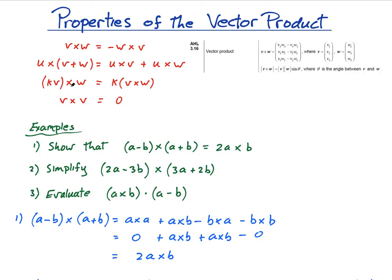Hopefully, it's fairly straightforward. The kind of main things to remember are this, v cross w equals negative w cross v, and then v cross v equals zero. Okay, see you in the next lesson.